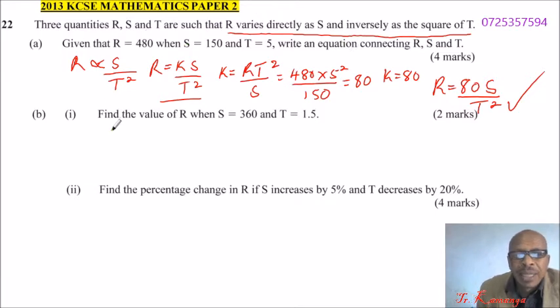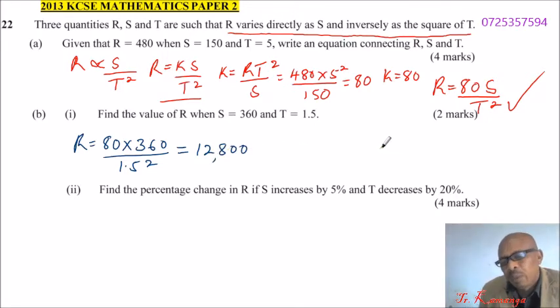We go to part B. Find the value of R when S is 360 and T is 1.5. Since we have obtained our equation in part A, R equals 80 times 360 divided by 1.5 squared. Using your calculator, you will find that this is 12,800.